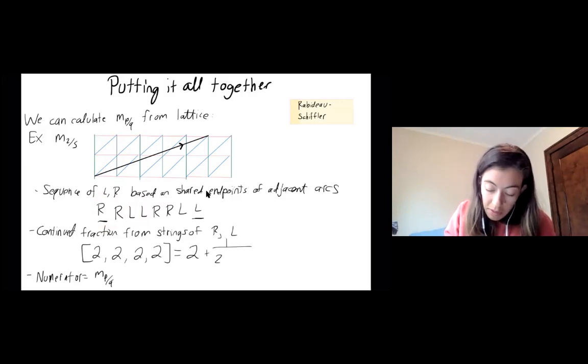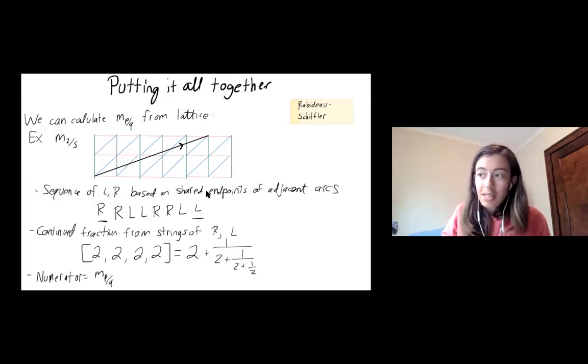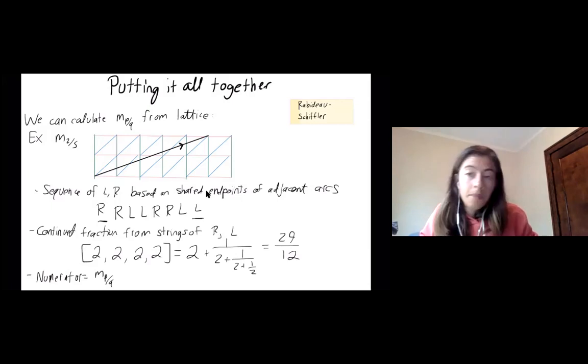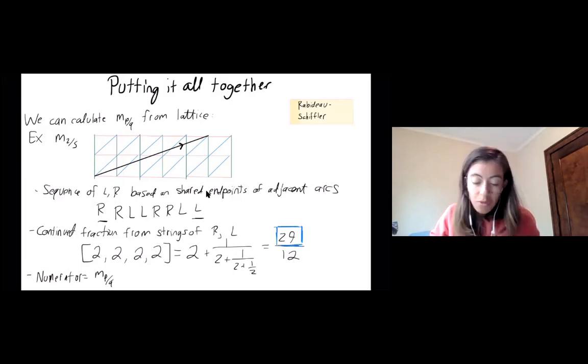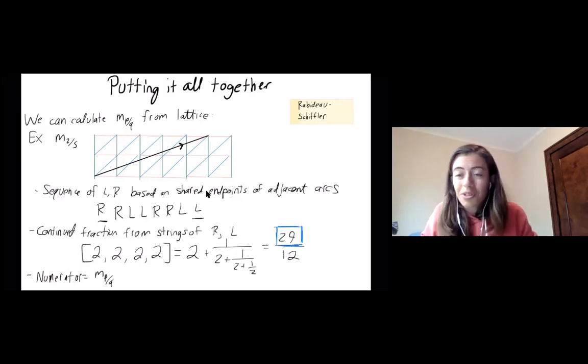It looks like this, and I definitely did this ahead of time, because I wouldn't want to do this on the spot. Okay, so I get 29 over 12. And you will recognize, perhaps, that 29 was what we just threw out there earlier, that that should be M25. But here's really a better reason to say that this is M25.